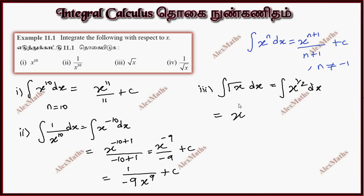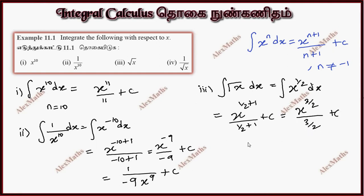This gives x power minus 9 by minus 9 plus c. For subdivision 3, the result involves x power 3 by 2, divided by 3 by 2, which simplifies to 2 by 3 times x power 3 by 2 plus c.